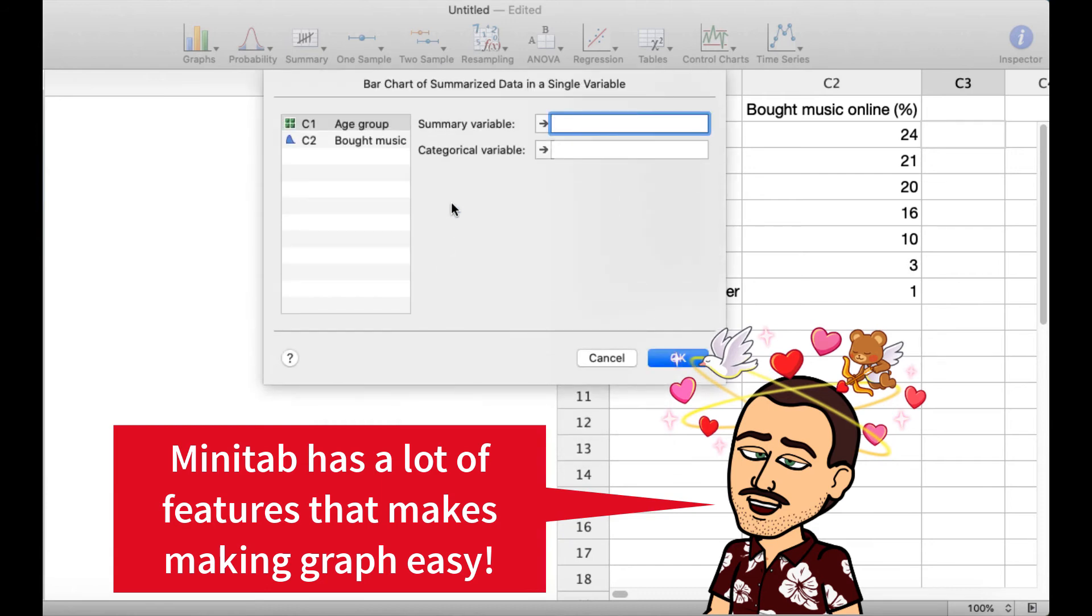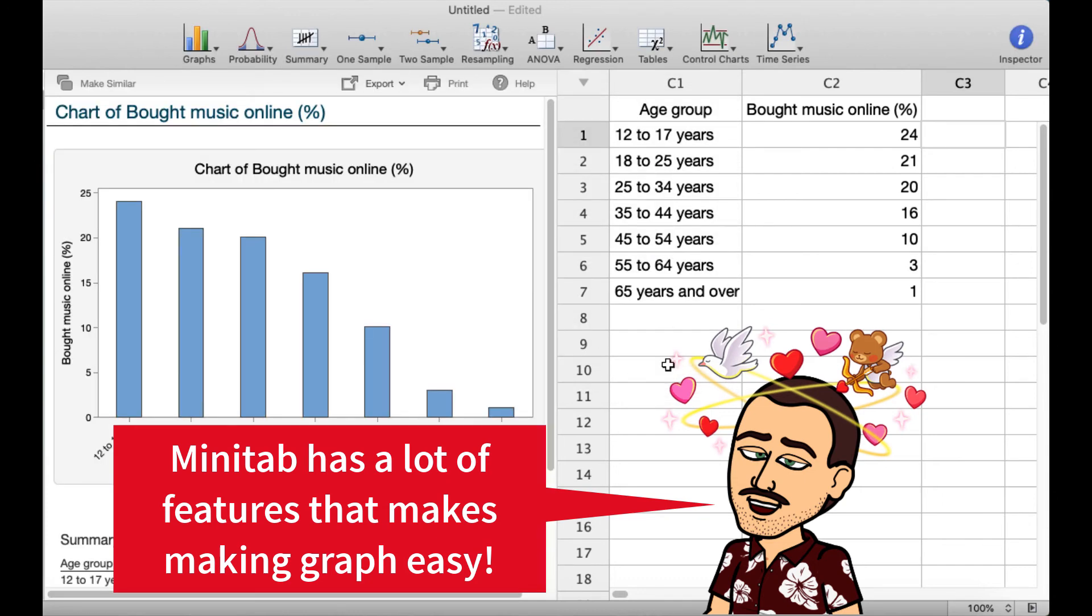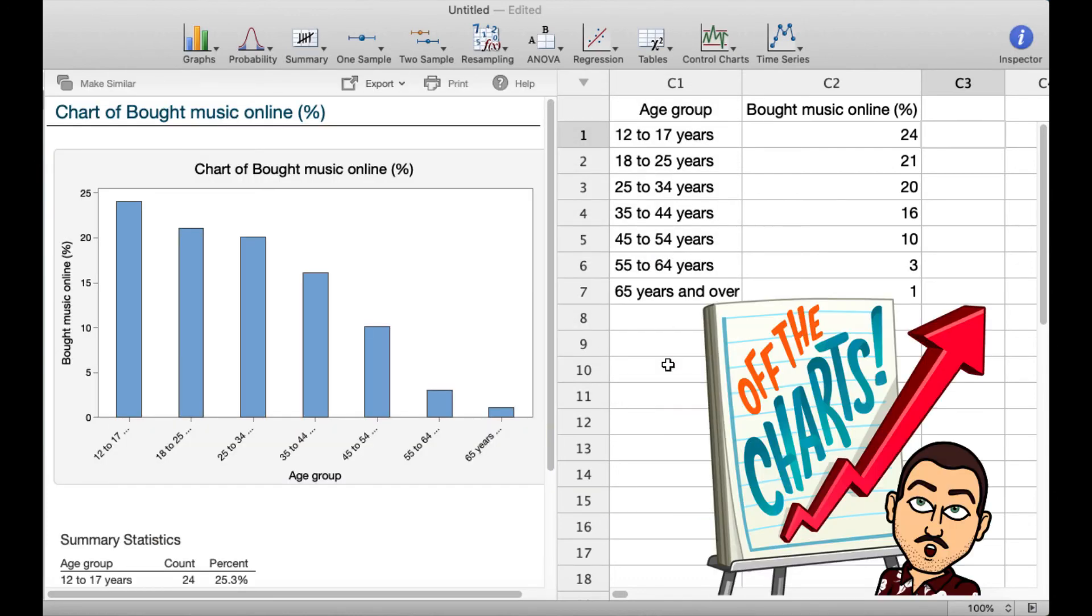So we need a summary variable. That's going to be the percent that bought music online. And a categorical variable. Well, that's our age group. We input those two. And ta-da, we get our bar chart.